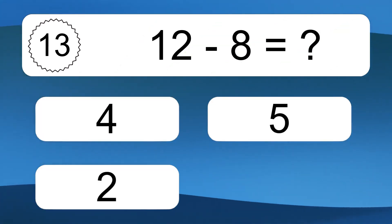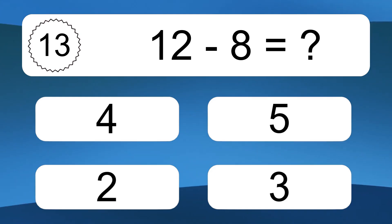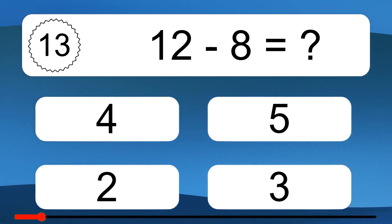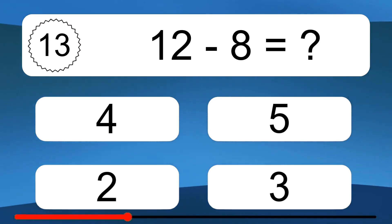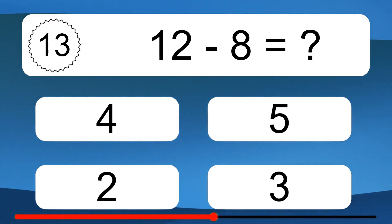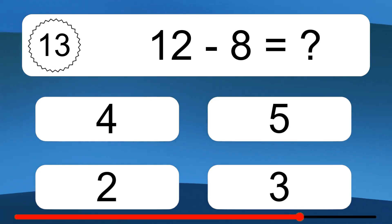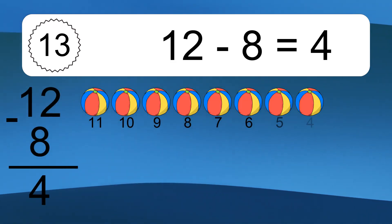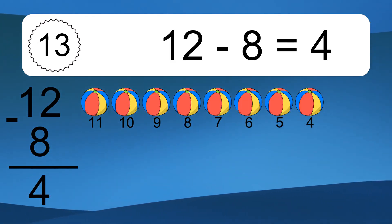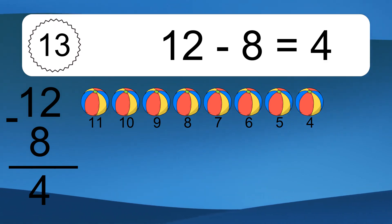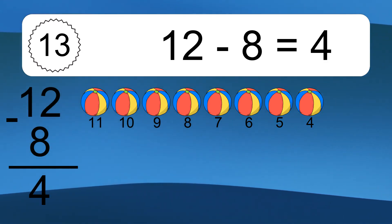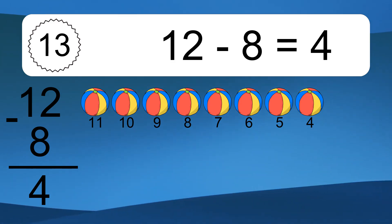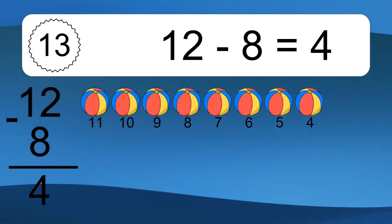12 minus 8 equals what? 12 minus 8 equals 4. Let's count it: 11, 10, 9, 8, 7, 6, 5, 4.